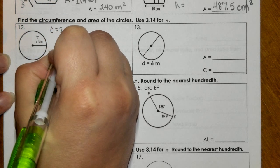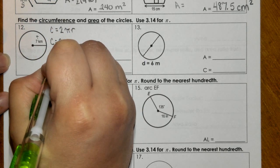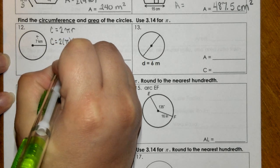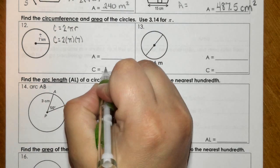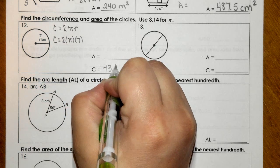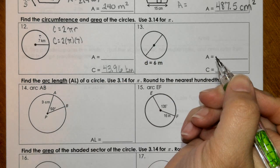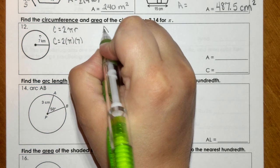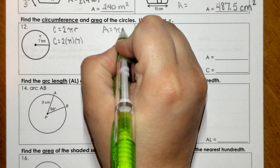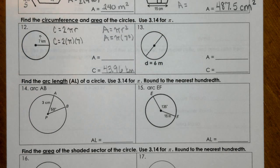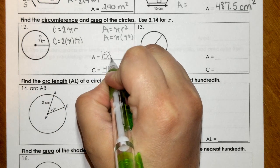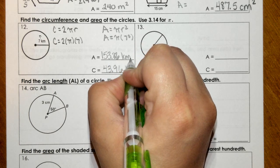For circumference, we're dealing with 2πr. So 2π times 7. I'm going to do 2 times 7 is 14 times 3.14 for pi. And we get 43.96 kilometers. For our area, πr squared, we would have π times 7 squared. So 49 times 3.14, we get 153.86 kilometers squared.